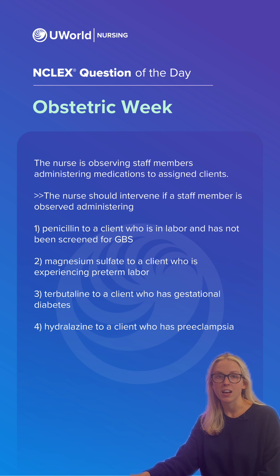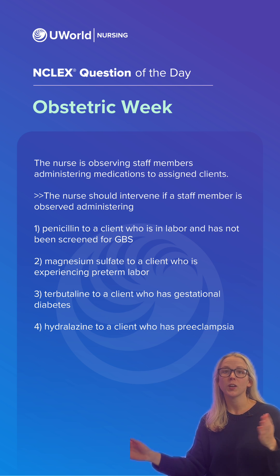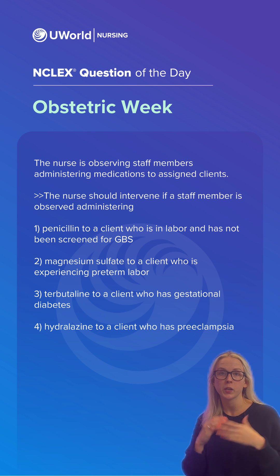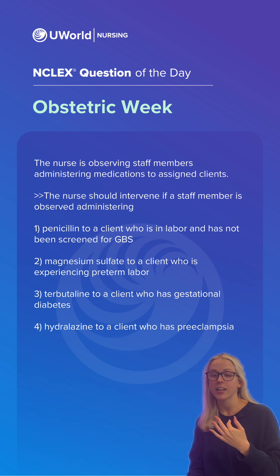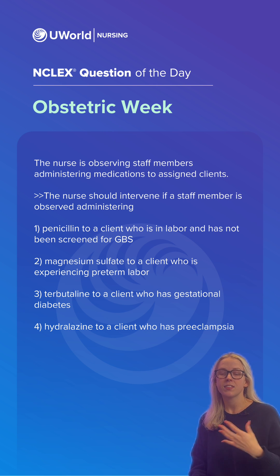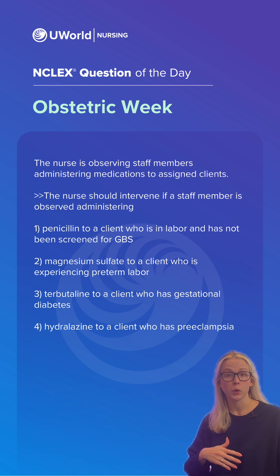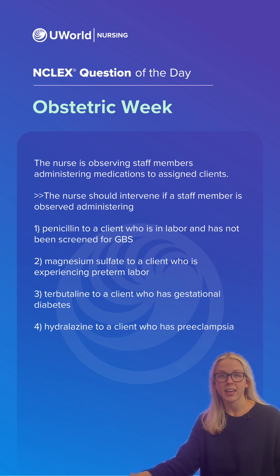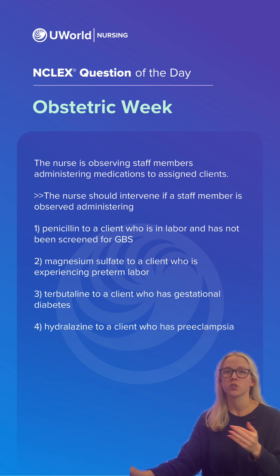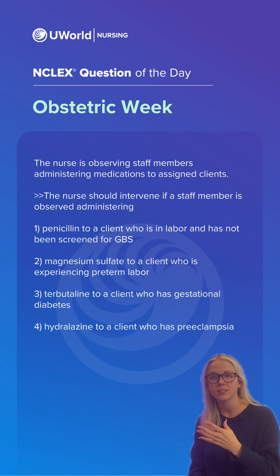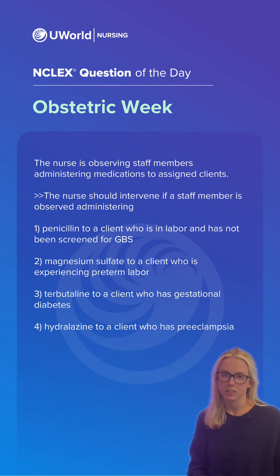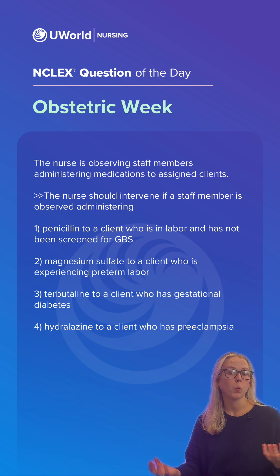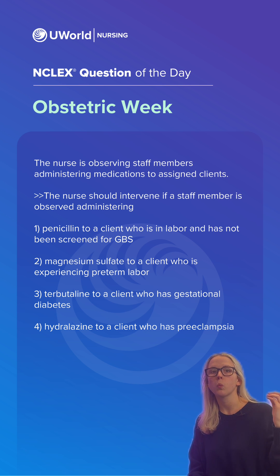Our correct answer is option three: administering terbutaline to the client who has gestational diabetes. Terbutaline is a beta-agonist medication used to help prevent or slow contractions. In this case, it is not indicated in clients with gestational diabetes because it can actually worsen that diabetes, placing some clients at risk for ketoacidosis. This is where we would want to intervene.